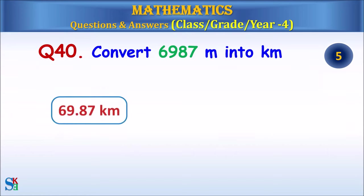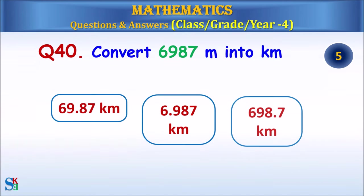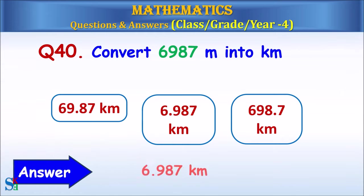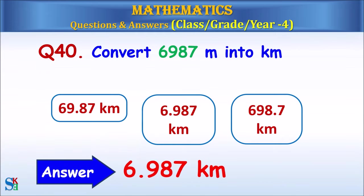Question 40: Convert 6,987 meters into kilometers. The answer is 6.987 kilometers.